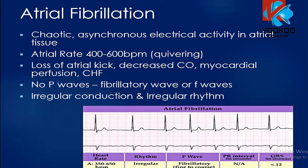Atrial fibrillation occurs when the electrical activity in atrial tissue is asynchronous or chaotic. You cannot see distinct P waves — only fibrillatory waves. This indicates loss of atrial kick, which reduces cardiac output, reduces myocardial perfusion, and exacerbates heart failure. Because of fibrillatory waves there is irregular conduction and an irregular rhythm. Look at the RR intervals — they are irregular and there are no distinct P waves, so we call this atrial fibrillation.